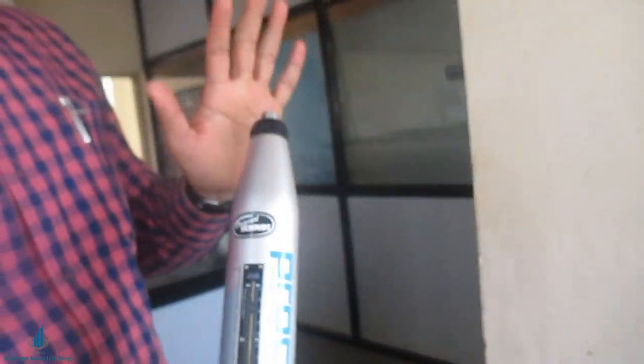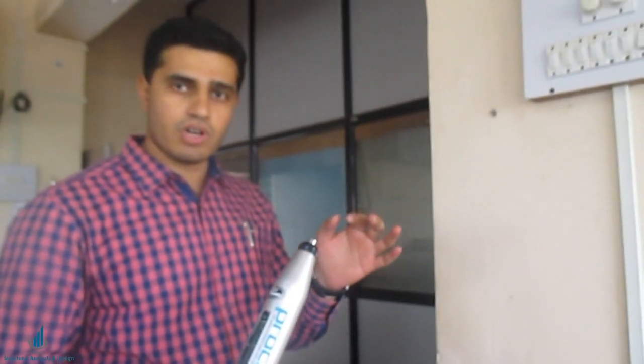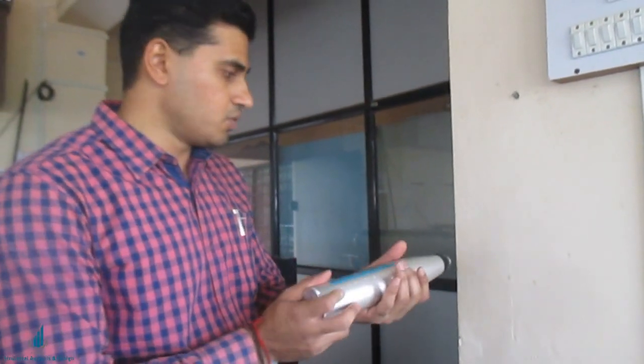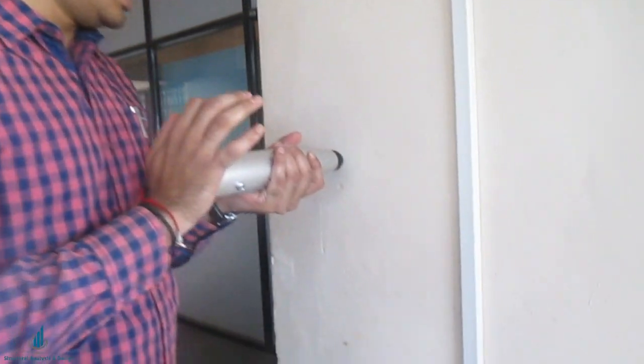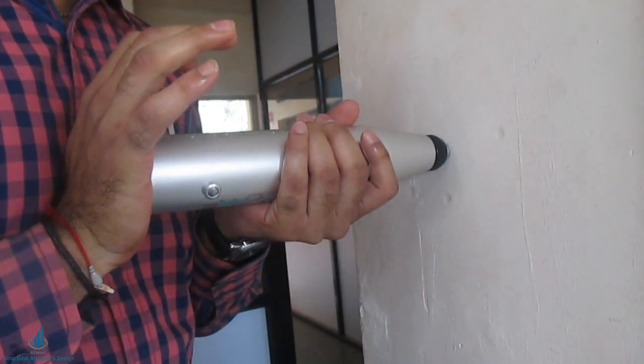This is plunger in locked position. If you want to remove or unlock this plunger, what you have to do is just place it horizontally and just give a slight push.